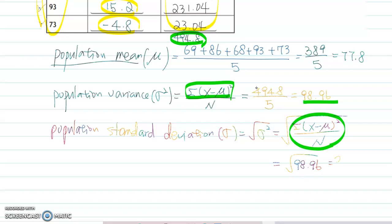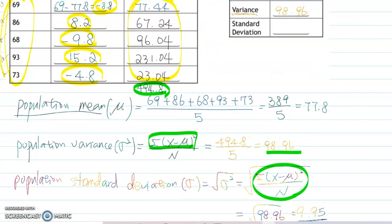The answer becomes 9.95. That will be your population standard deviation. So I'm going to fill in the blank here. So 9.95.